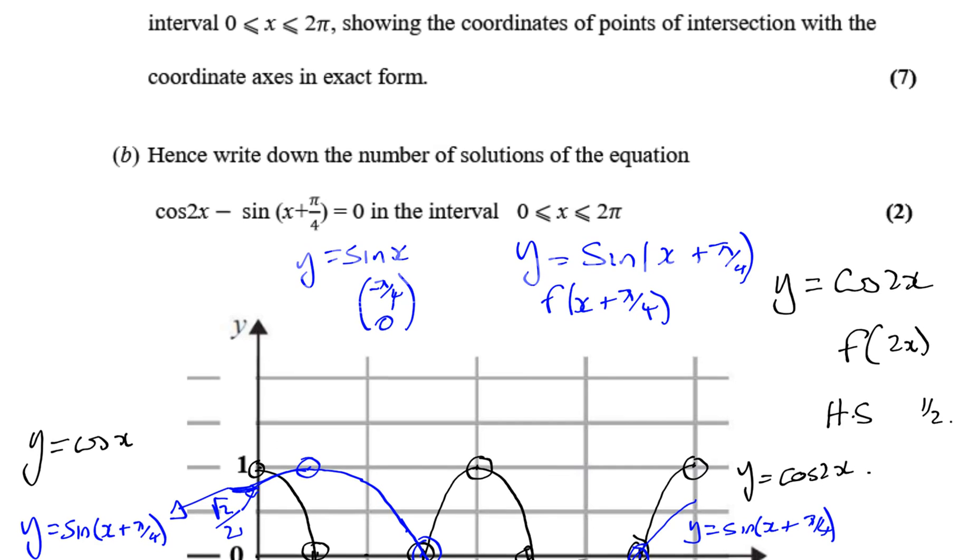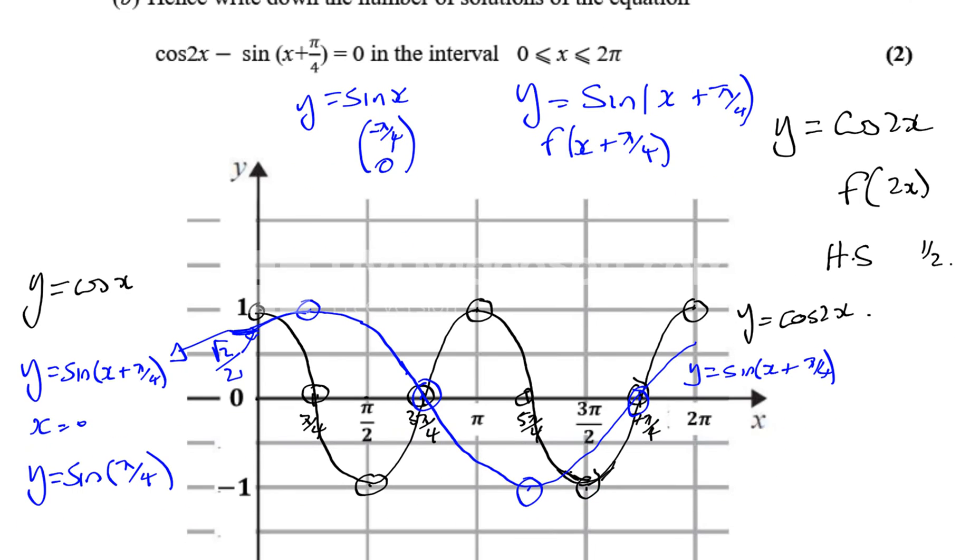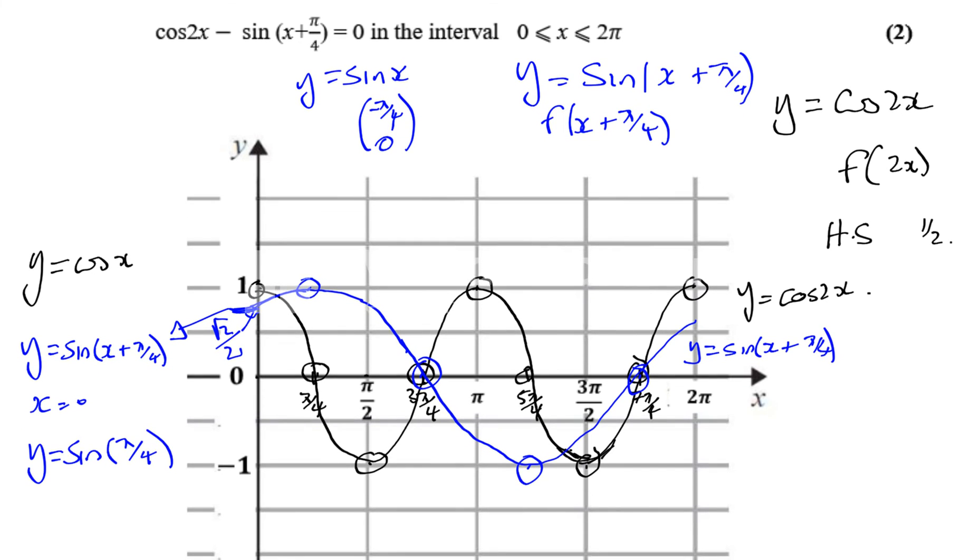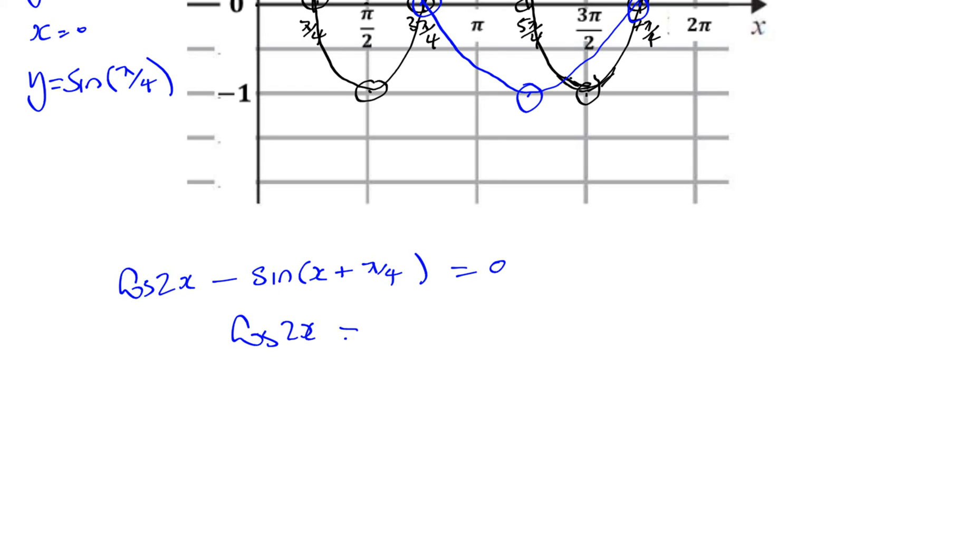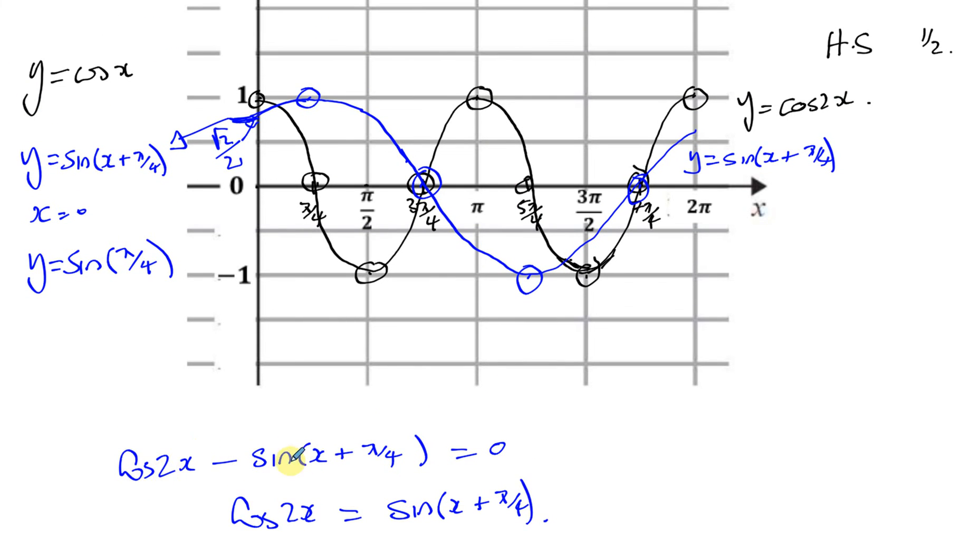And part B says, hence, using your drawing, write down the number of solutions of the equation cosine 2x minus sine x plus π over 4 equals 0 in the interval 0 and 2π. So you've got cosine 2x minus sine x plus π over 4 equals 0. We can rearrange this so you have cosine 2x equals sine of x plus π over 4. Now, I know that I've drawn y equals cosine 2x and y equals sine x plus π over 4. If I rearrange this, this is where they're equal to each other. This is where the difference between this curve and that curve is 0. The difference in the y values of this curve and this curve is 0, so they'll be at the same point. That means that's the point where they are equal to each other or where they intersect.